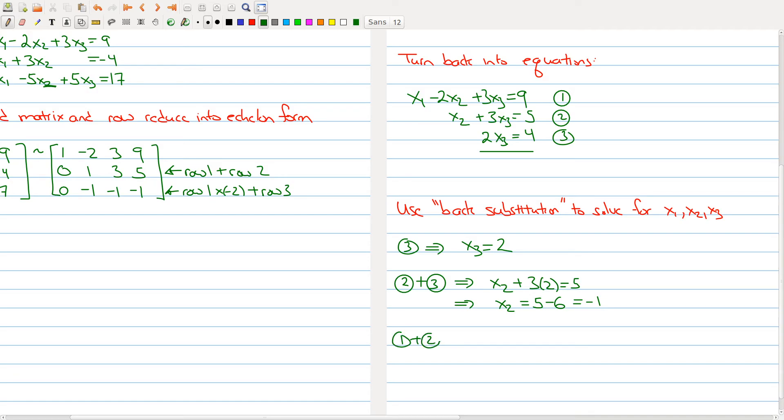Now I know what x3 and x2 is, and I'm going to use that information and substitute it into equation 1. So I have x1 minus 2 times negative 1 plus 3 times 2 is equal to 9. So let's simplify it. So I have x1, I have 2 plus 6, so I get 8 here. So I have 9 minus 8, which is equal to 1. So we get only one solution, and that solution is x1, x2, x3 is equal to 1, negative 1, and 2.